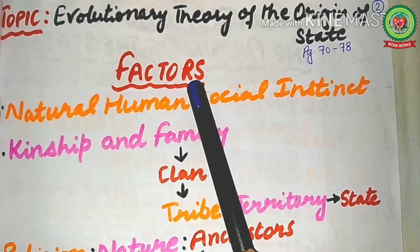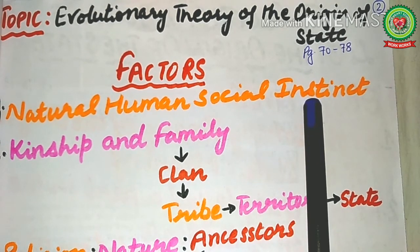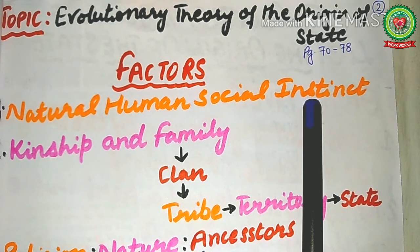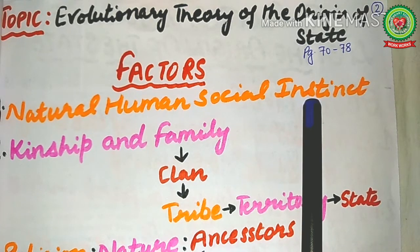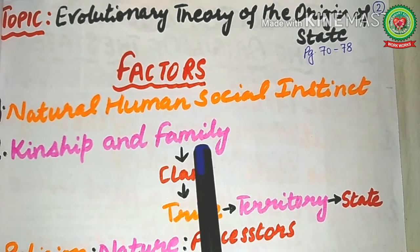The first factor is natural human social instinct. We all know that man is a social animal, and his necessities compel him to live in society — this is how he enters into social relationships. Society needs peace, order, and protection, and for serving these needs the state came into existence in a natural way. This is the first factor: natural human social instinct.